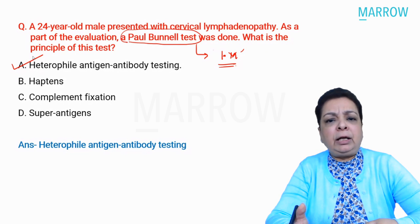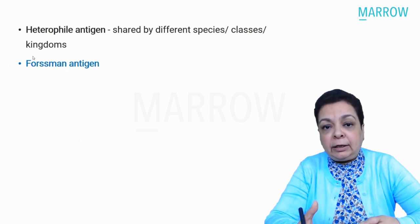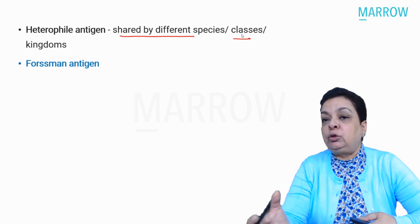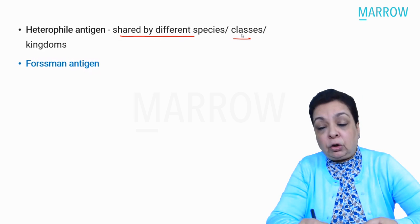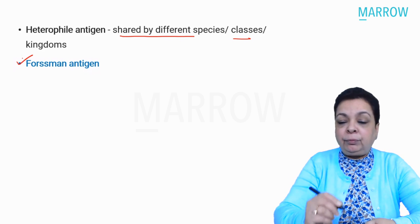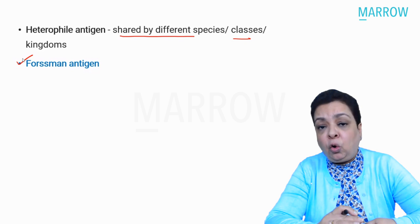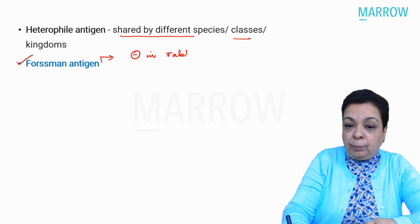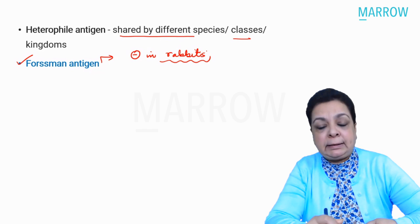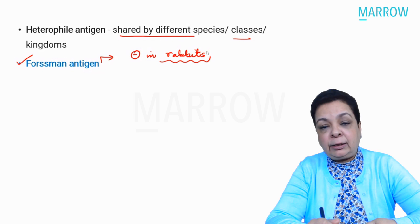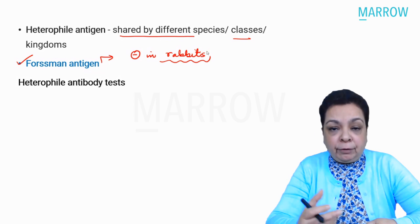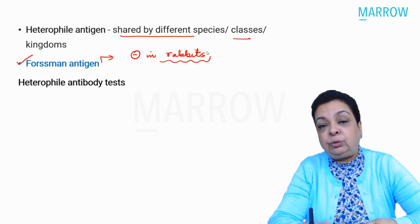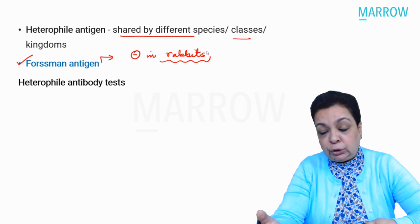The Paul Bunnell test is done in infectious mononucleosis caused by Epstein-Barr virus and detects heterofile antibodies — the answer is heterofile antigen-antibody testing. Heterofile antigens are antigens shared by different species, classes, and kingdoms. A classical example is the Forssman antigen, present in all eukaryotes except rabbits.